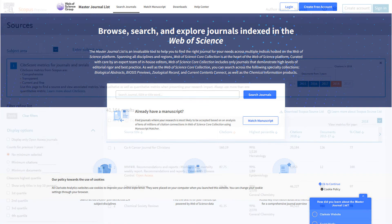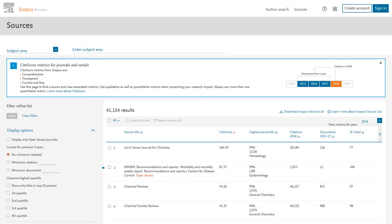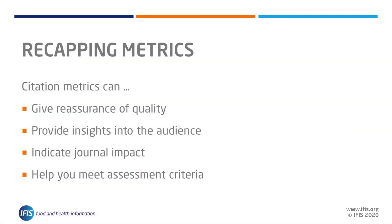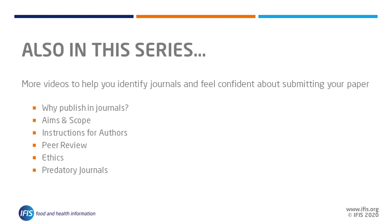In conclusion, citation metrics and their databases can give some valuable reassurance of the quality of a journal and provide some insights into the audience and potential impact your article may have. Read even more details on this topic in our journal publishing guide, and watch the rest of the videos in this series for information on understanding why we publish in journals, aims and scopes, instructions for authors, peer review, ethical considerations, and more information on predatory journals.